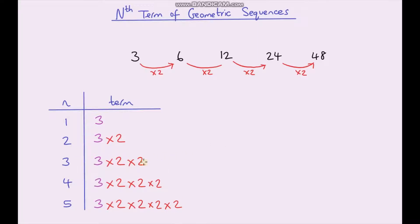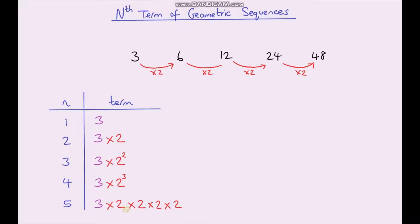Before going further, I'm going to simplify these slightly. Instead of writing 2 times 2 I can write that as 2 squared. Instead of writing 2 times 2 times 2 I can write 2 cubed. And rather than writing 2 times 2 times 2 times 2 I can write 2 to the power 4. Now I'd like you to think about whether you can spot a relationship between our term numbers and these indices.